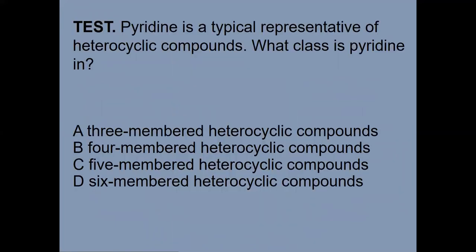Test: Pyridine is a typical representative of heterocyclic compounds. What class is pyridine in? The correct answer is D: six-membered heterocyclic compounds.